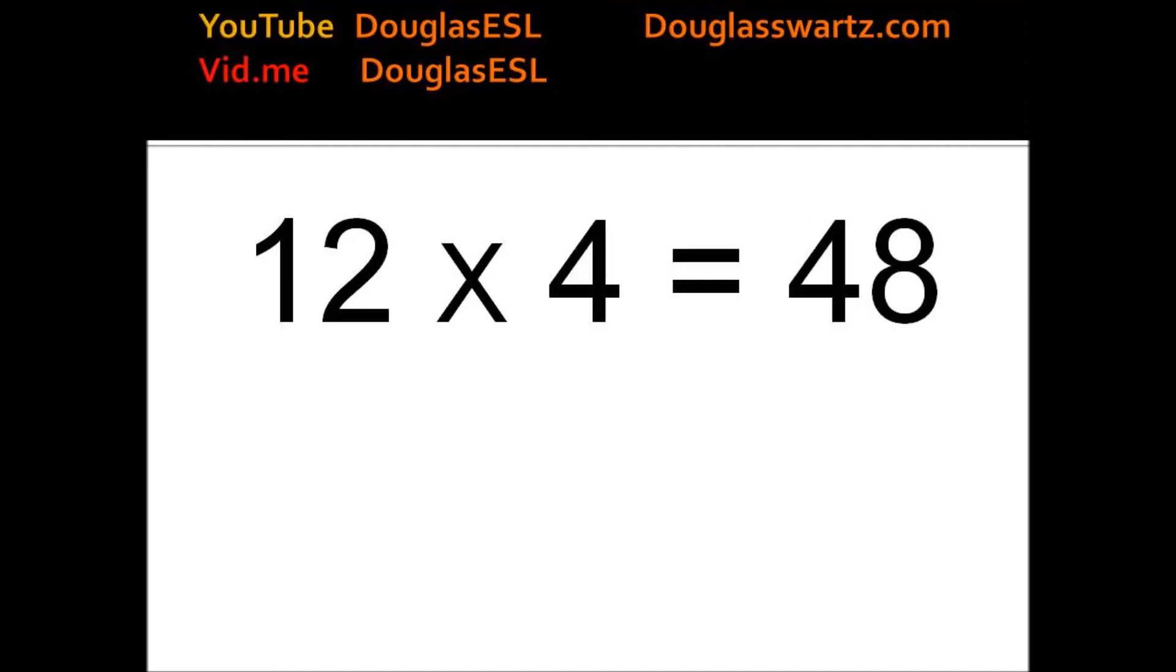12 times 3 equals 36. 12 times 4 equals 48. 12 times 5 equals 60. 12 times 6 equals 72.